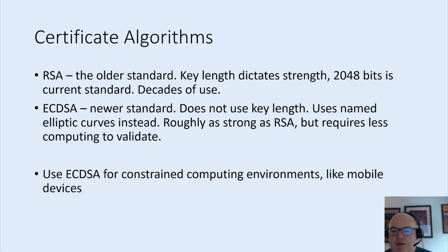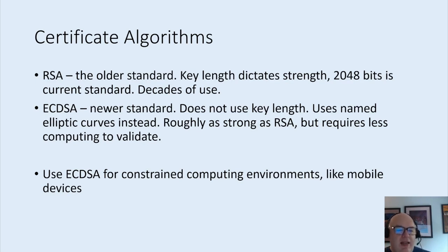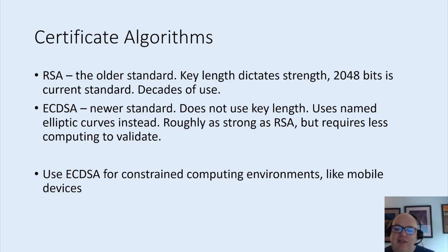Certificates have a couple different algorithms these days. There's RSA, the older standard — 2048 bits is the current standard, it's been around a long time and we know it's pretty solid. ECDSA is a newer standard that does not use key length but instead uses named elliptic curves. It's roughly as strong as RSA but requires less computing to validate. It's also not been around as long and hasn't earned the same trust. In general, use ECDSA if you are targeting mobile devices.